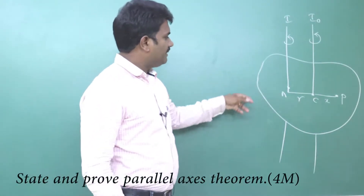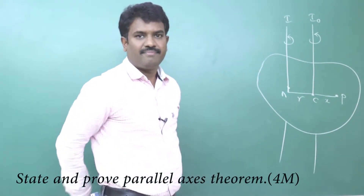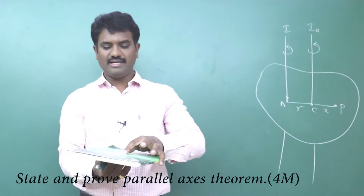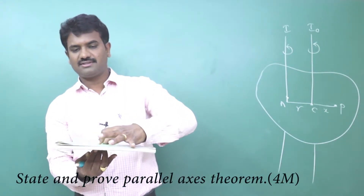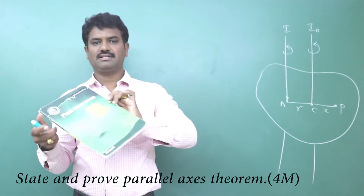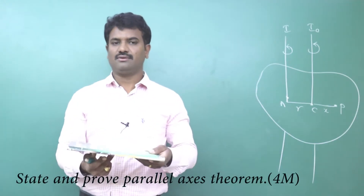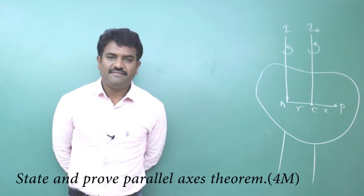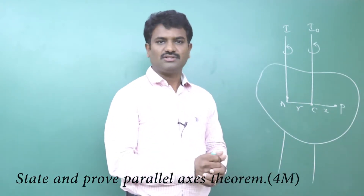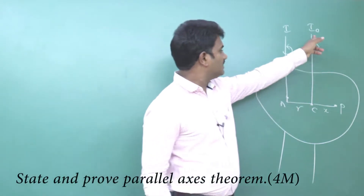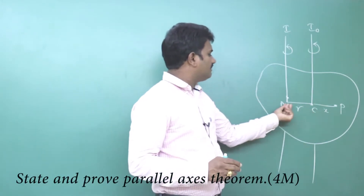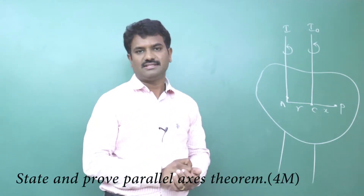Consider this is a plane lamina of mass M. This plane lamina can rotate with respect to any axis — it may rotate with respect to an axis passing through its center of mass, or with respect to any other axis. Let us find the moment of inertia with respect to an axis through the center of mass, and also with respect to another axis parallel to it at a distance r from the center of mass.